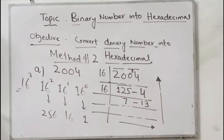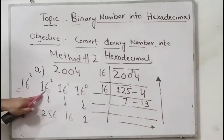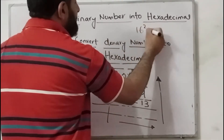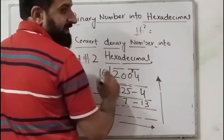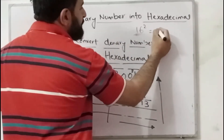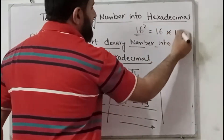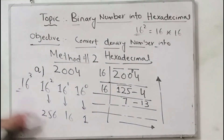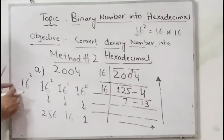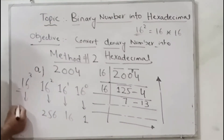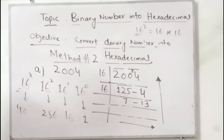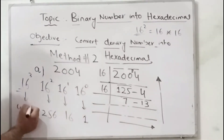16 power 2 means 256 — you need to multiply 16 by itself 2 times: 16 multiplied by 16 gives you 256. And then 16 power 3 will give you 4096.